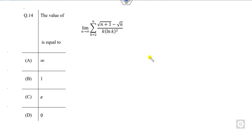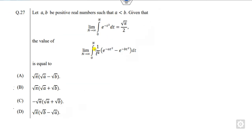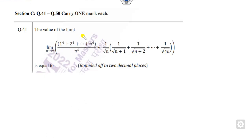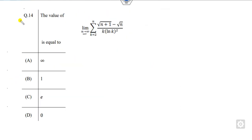The first question is about finding a limit. The second question is about finding which of the following is the false statement from two functions h and g. The next one is finding an integration over a limit — a fill-in-the-blank rounded to two decimal places. The last question is number 59. Now let's see how you can solve these five questions within a few minutes.